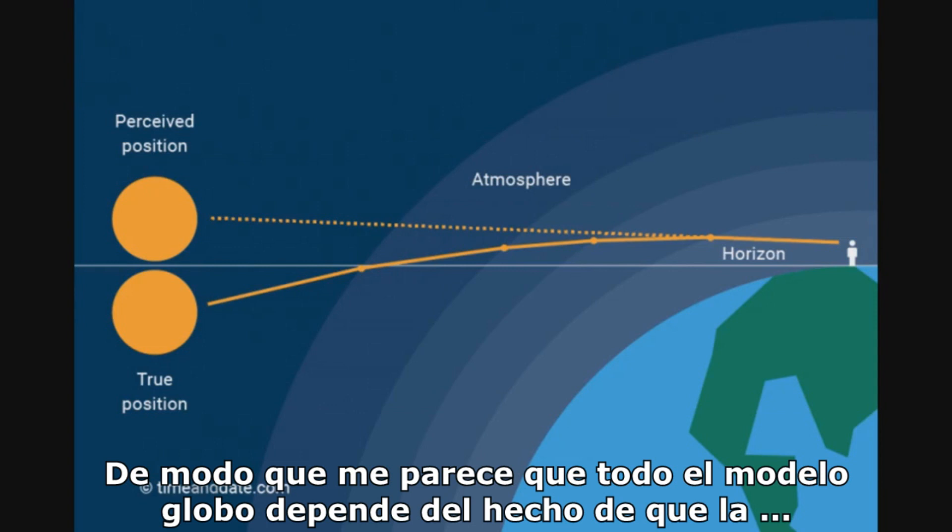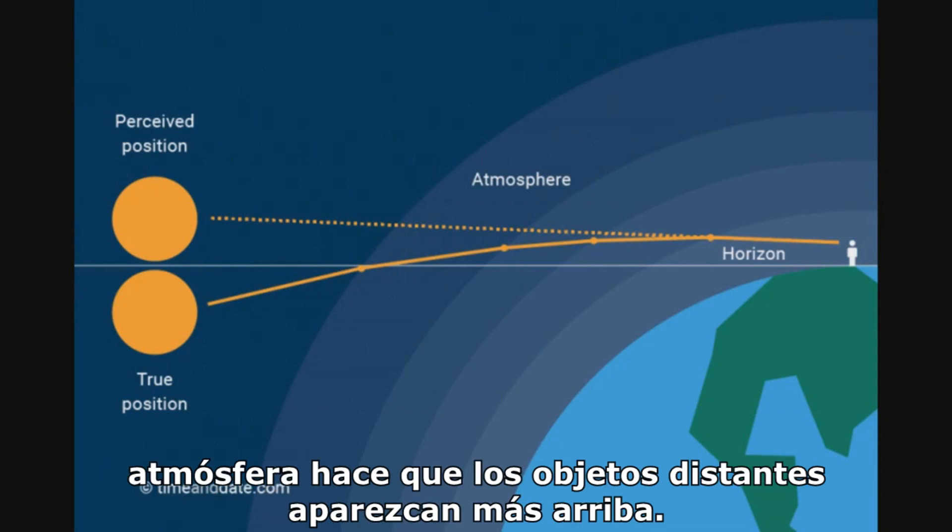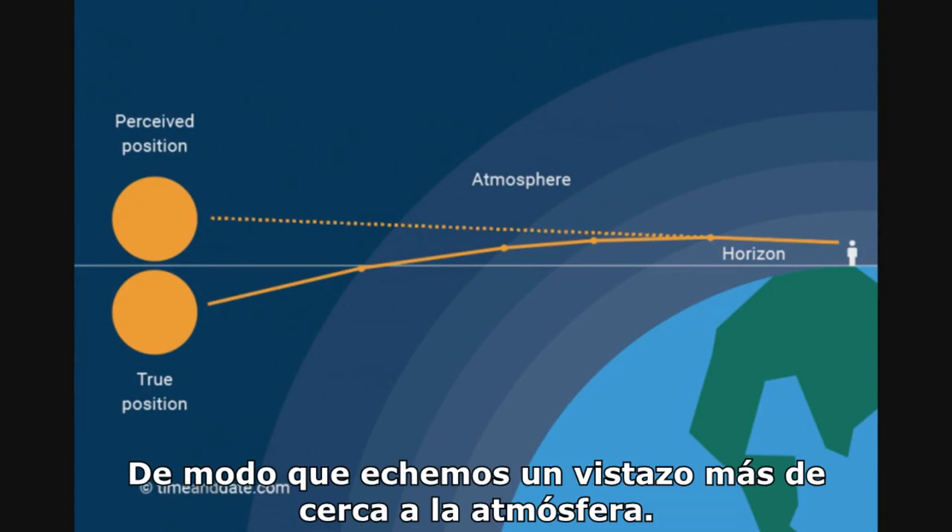It seems to me that the entire globe model hangs on the fact that the atmosphere causes distant objects to appear higher. So let's take a closer look at the atmosphere.